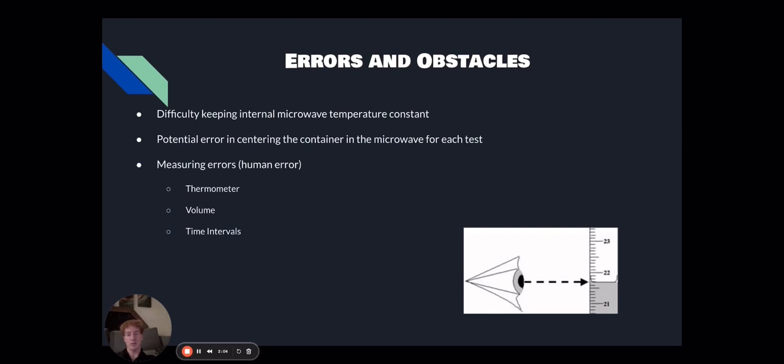Some errors and obstacles that we ran into included difficulty keeping internal microwave temperature constant because we could not accurately measure it. So it was not easy to ensure that it stayed constant, but by leaving it open long enough, we reasonably guaranteed that this occurred.